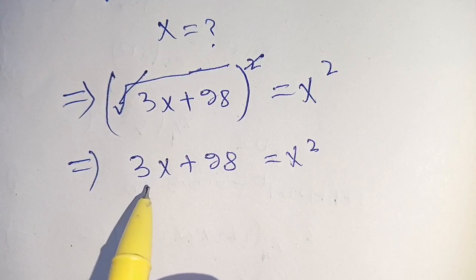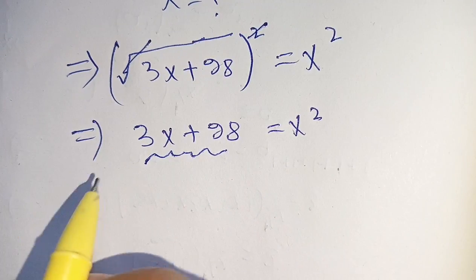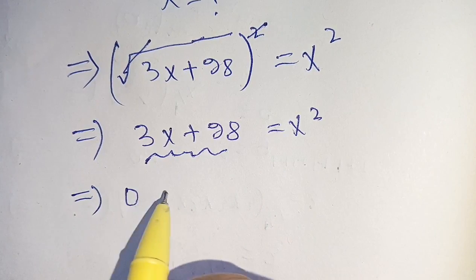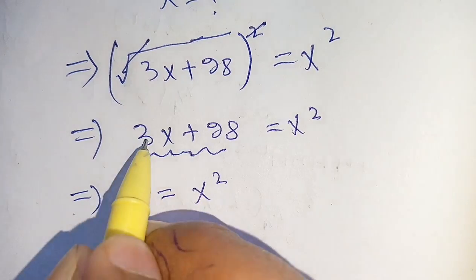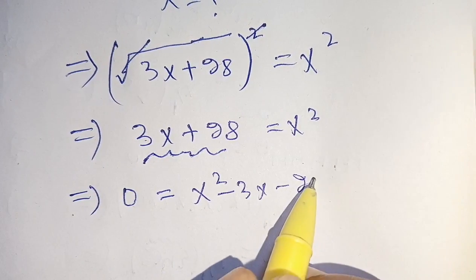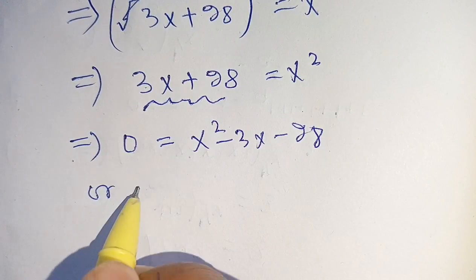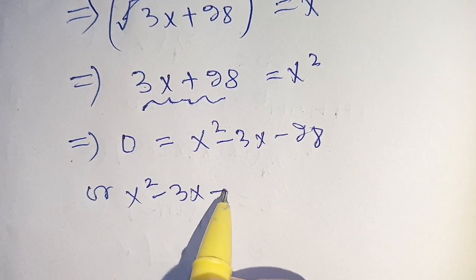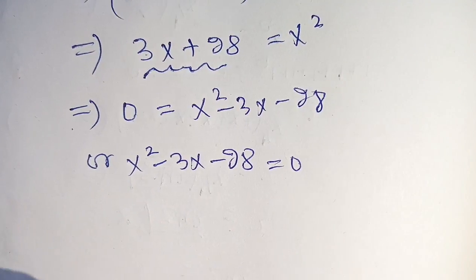Now we shift the left hand side to the right hand side, and our equation becomes 0 is equal to x squared minus 3x minus 28. Or we can write it as x squared minus 3x minus 28 is equal to 0.